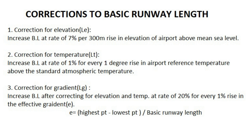The second correction is for temperature. We need the airport reference temperature. The runway length is increased at the rate of 1% for every 1-degree rise in airport reference temperature above the standard atmospheric temperature at that elevation. The standard temperature at the airport can be determined by reducing the standard mean sea level temperature of 15°C at the rate of 6.5 degrees per thousand-meter rise in elevation. If the airport is at a higher elevation the correction will be less, and if it is at a lower level the correction required will be more.